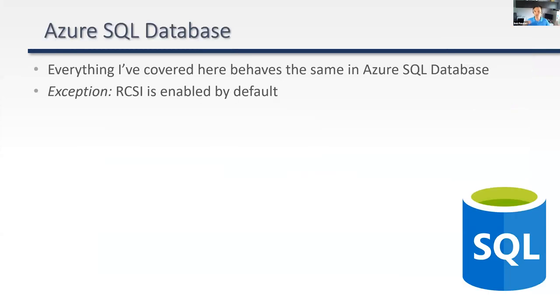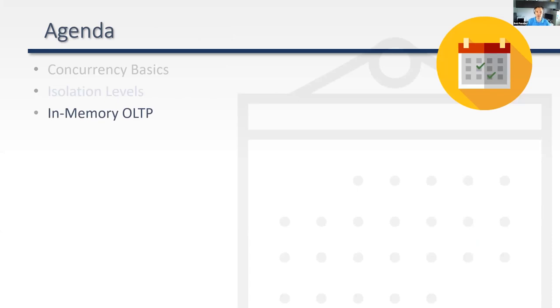Those are all the isolation levels. A note on Azure SQL Database: everything we talked about today works in Azure SQL Database — same database engine, same behavior. The one exception is that a new database in Azure SQL Database has read committed snapshot isolation enabled by default, rather than regular read committed. Finally, we'll briefly touch on in-memory OLTP — an incredibly complex topic that could be its own presentation.